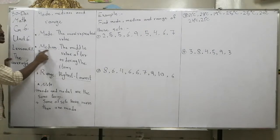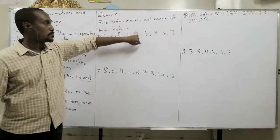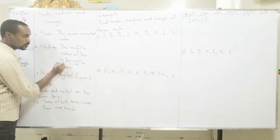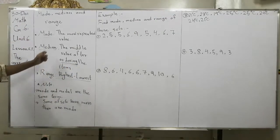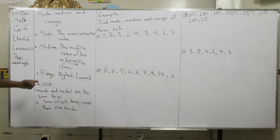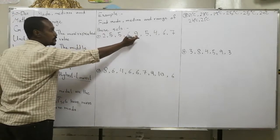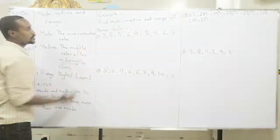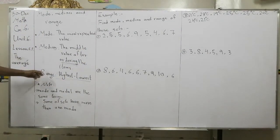The median is the number in the middle, but we should first order the numbers. So this is the median. The range — you should find the highest value minus the lowest value. This is mode, median, and range.